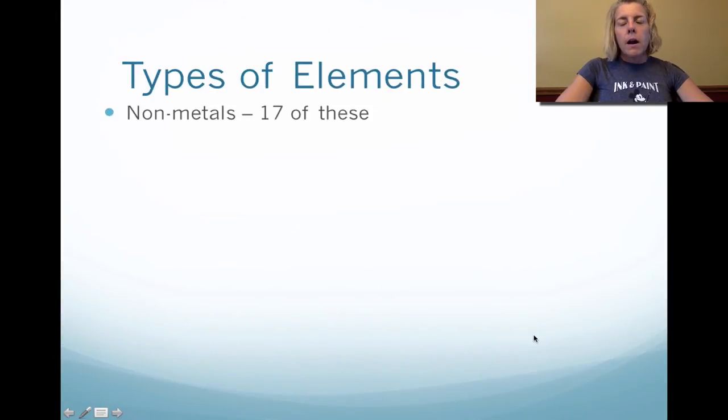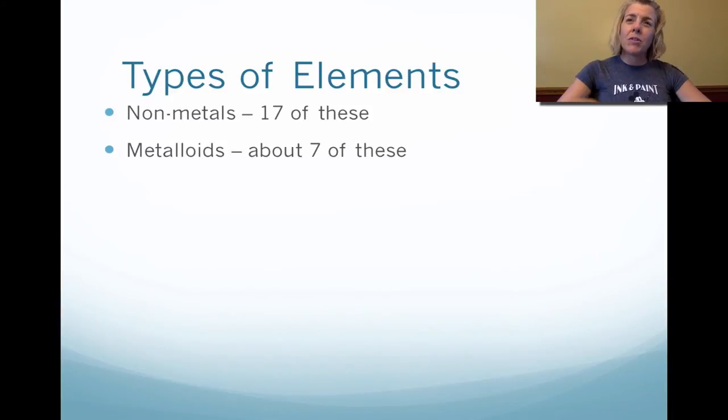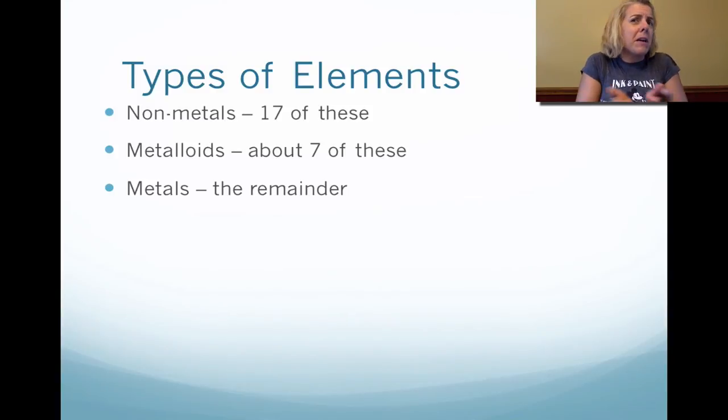Types of elements. This is the organization of the periodic table. There are only 17 non-metals, so it's a very tiny portion of the right-hand side of the periodic table. In between, sandwiched in the middle, are the metalloids. They are the step stair that I'll point out to you a number of times. There's only seven of them, and they have properties of both. And then lastly, the metals make up the biggest portion of the periodic table.